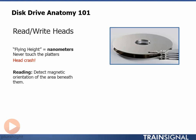Reading data from a hard drive is done by the read-write heads, which detect the magnetic orientation of the particles that pass beneath them. Writing is similar — only this time the read-write heads change the magnetic orientation of the particles that pass beneath them, and they do this by applying positive or negative electrical charges.